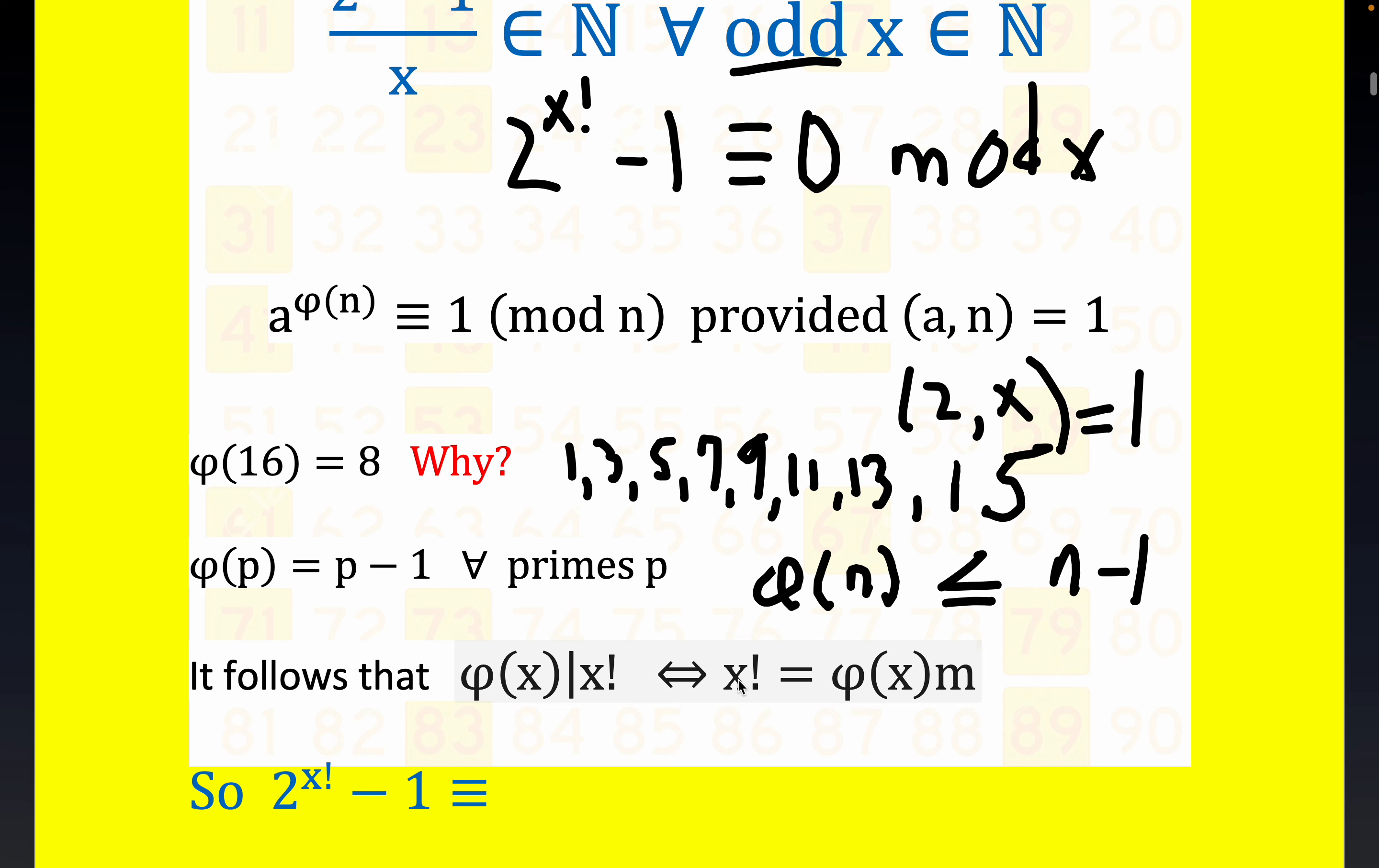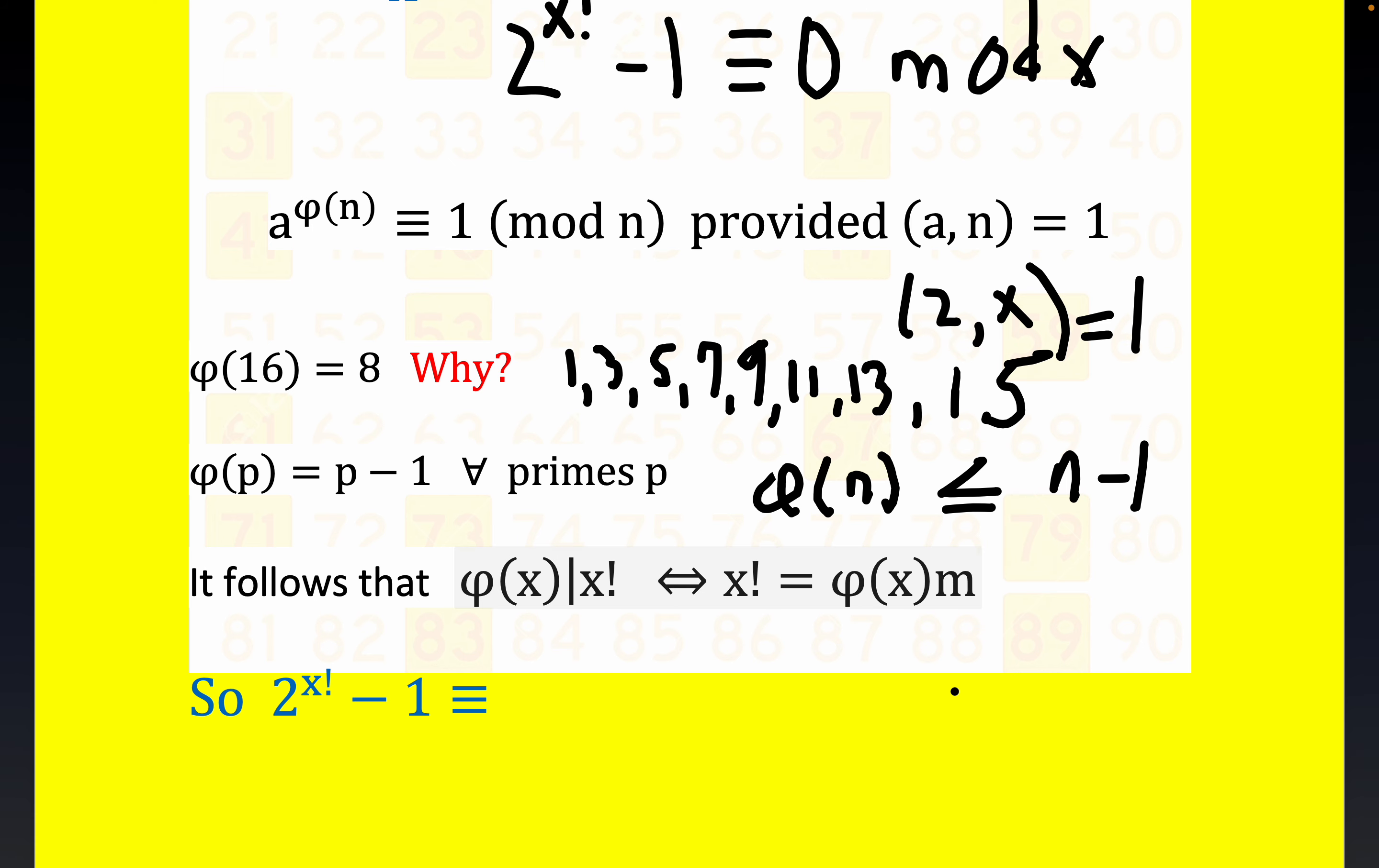So that ends up being quite important here because now we can write x factorial is φ of x times n, where n is just some integer. And so what we can do right here is rewrite this. This would be congruent to 2. Now again, I'm just going to replace x factorial with this result right here. So you would get 2. And I'll go ahead and raise it to the nth power. This is just properties of exponents, folks.